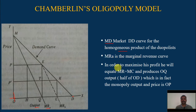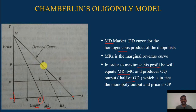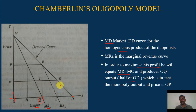In order to maximize his profit, firm A equates marginal revenue to marginal cost and produces OQ of output. OQ is half of OD — that is, half of the total market demand — which is in fact the monopoly output. The price is fixed at OP by firm A.